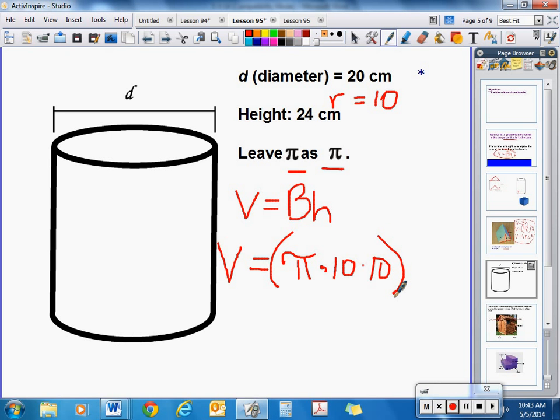And then we take it times the height of the cylinder, which they told us in the information was 24. They told us to leave pi as pi, so we have 10 times 10, which is 100. 100 times 24 is 2400 pi. And that would be centimeters cubed for the volume.